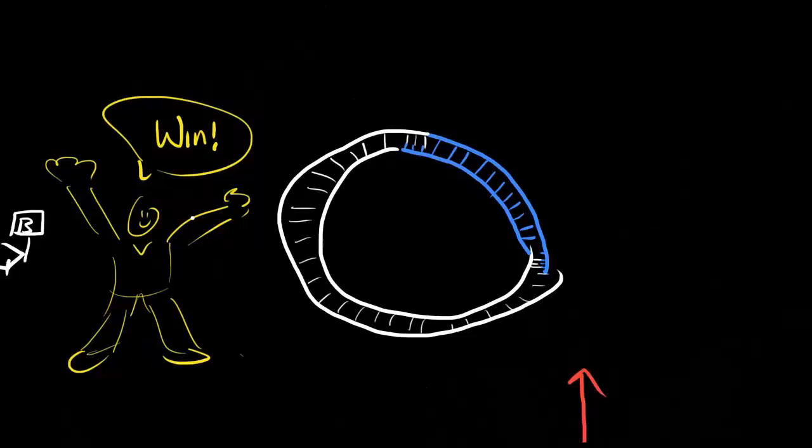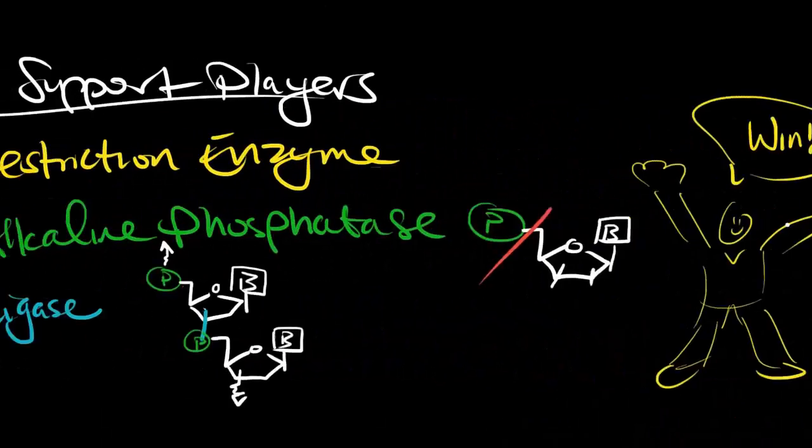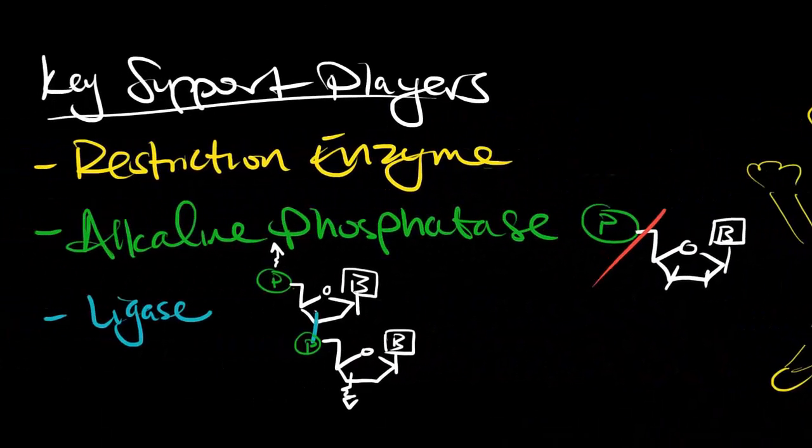In addition to the vector and the insert, there are other important players that play a supportive role. Without them, the process wouldn't work. So, as mentioned before, restriction enzymes cut the DNA, allowing us to put the insert inside.